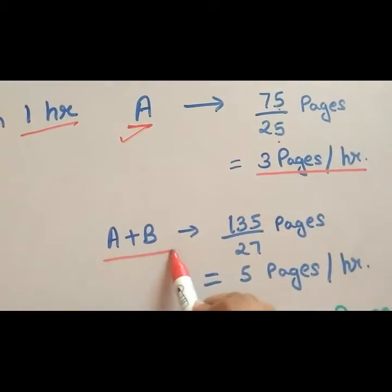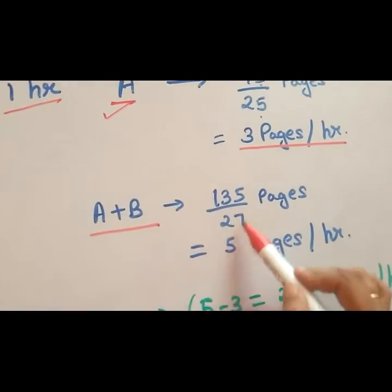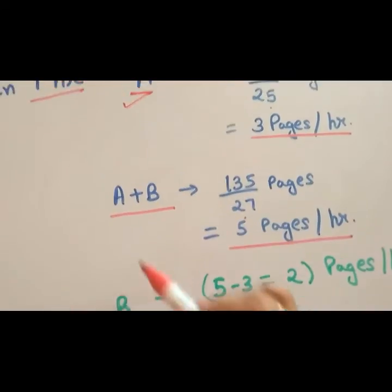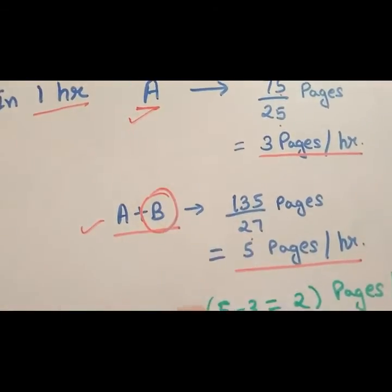And A plus B similarly can write how many pages? 135 divided by 27. That is 5 pages per hour A plus B can write. So B will write how much?